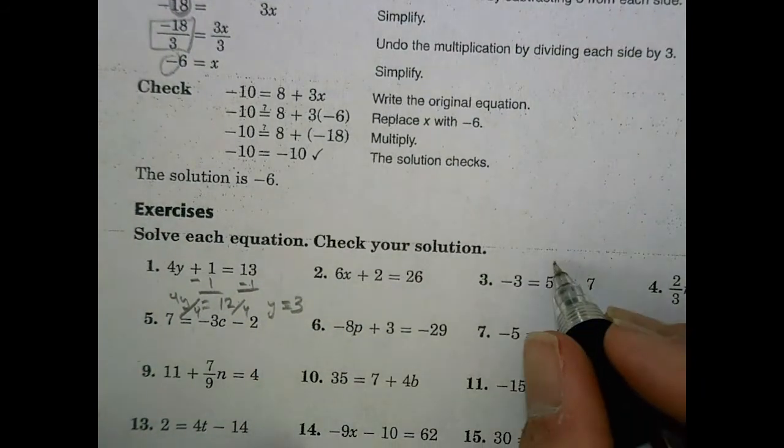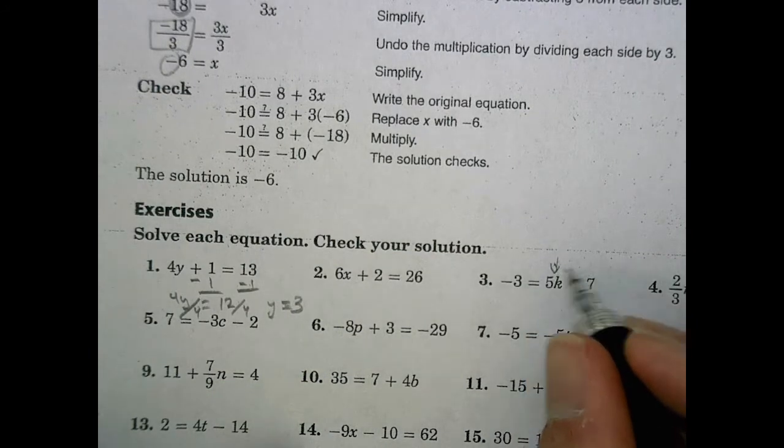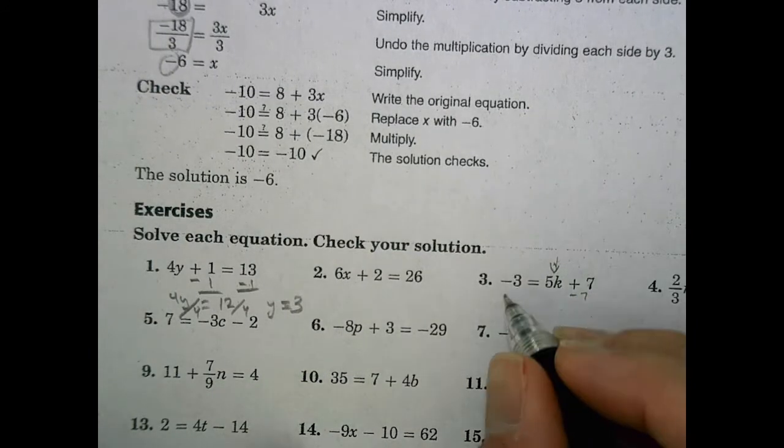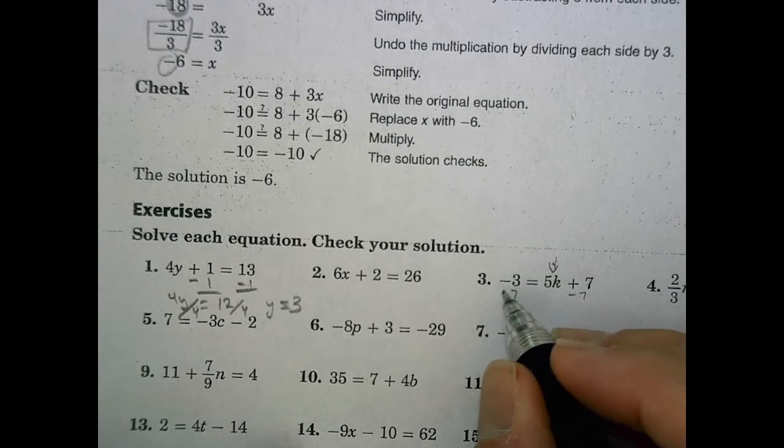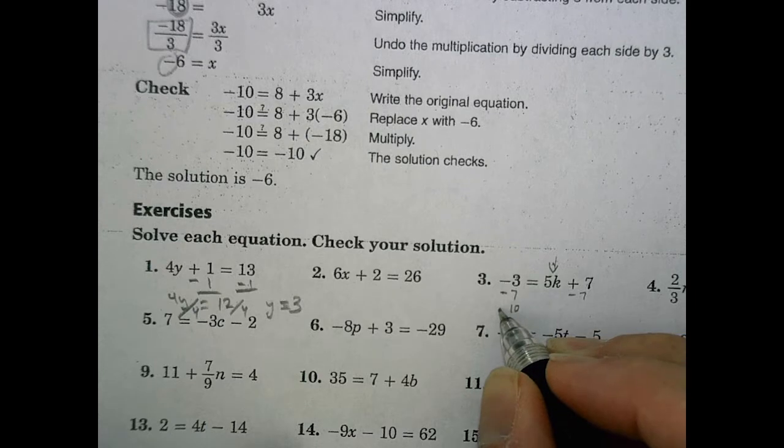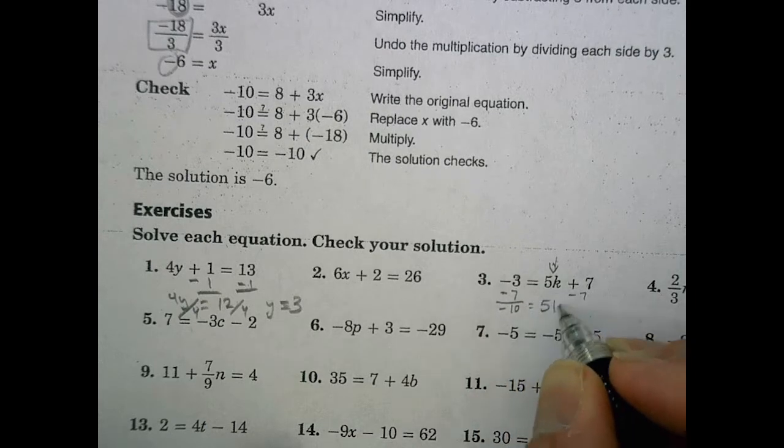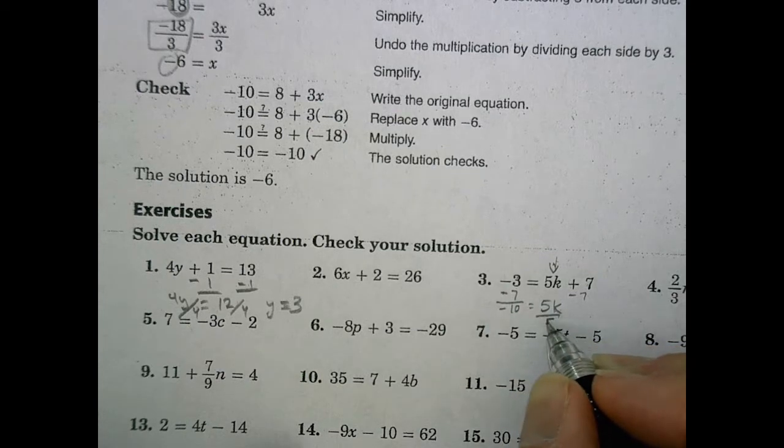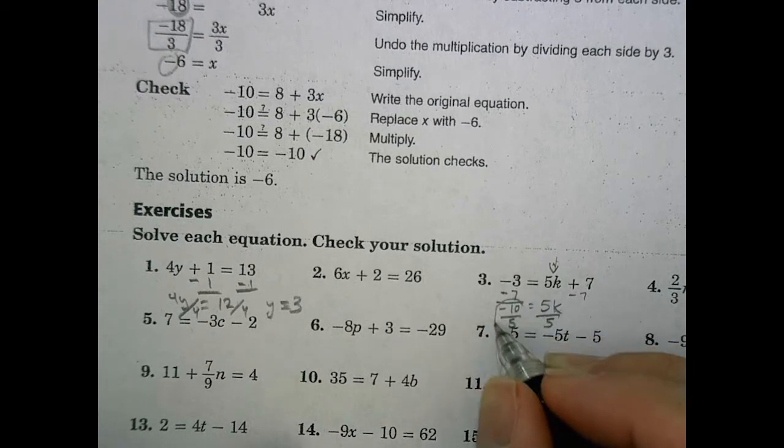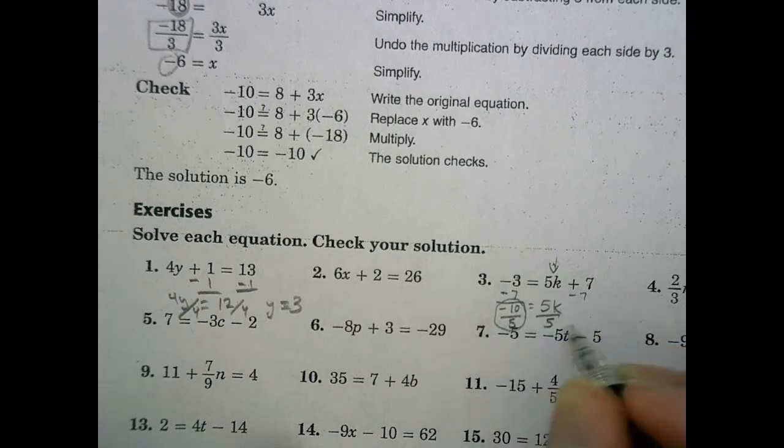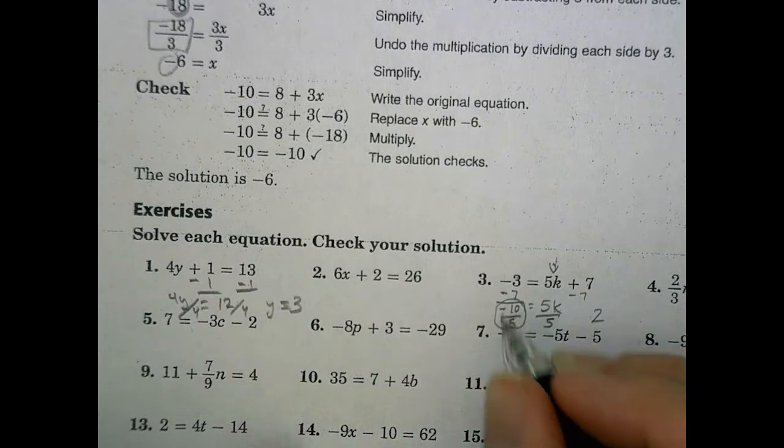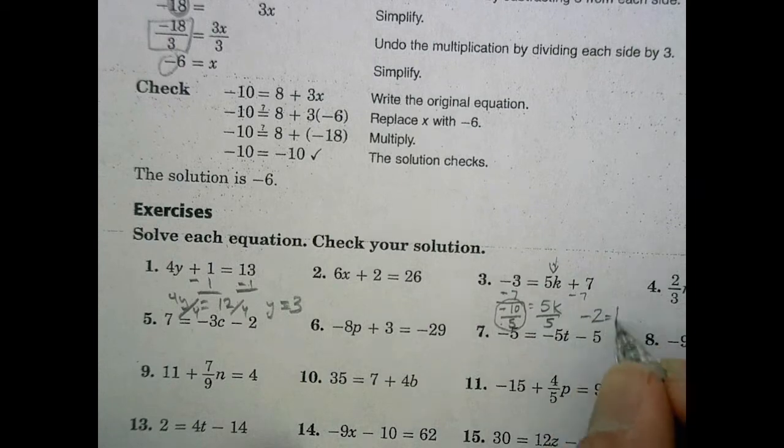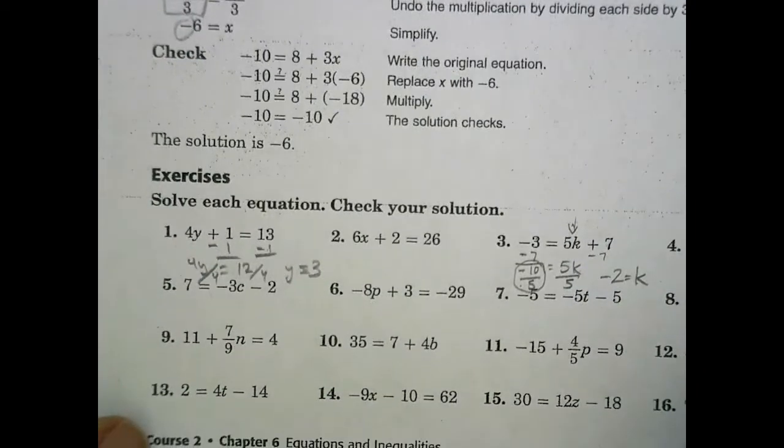Here, we want to get the k by itself. That's our goal, to isolate that variable. So we would subtract 7 from both sides. In this case, the signs are the same, so we find the sum and keep the sign. Negative 10 equals 5k. I want to get the k by itself, so I'll divide negative 10 by 5. Negative 10 divided by 5 is 2, but negative divided by positive is negative. So negative 2 becomes the value of k.